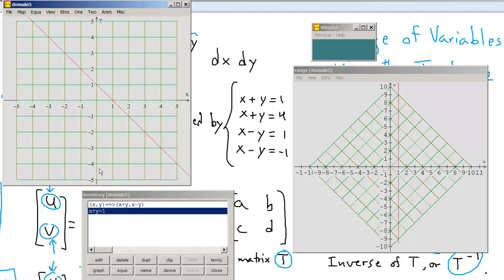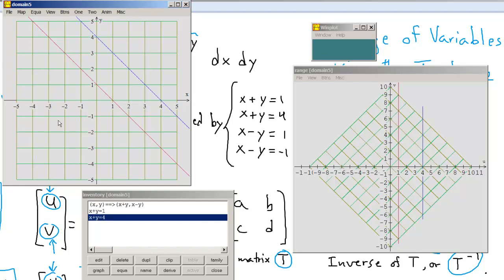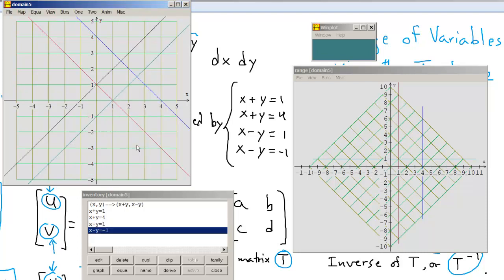Click OK. There's the first one. Then we'll click Equation, Implicit, and we'll do this again for all the others. X plus Y equals 4. I'm going to press F3, because that's the keyboard shortcut. Equation, Implicit is F3. We'll do X minus Y equals 1. I'll press F3. X minus Y equals negative 1. And I'll click OK.